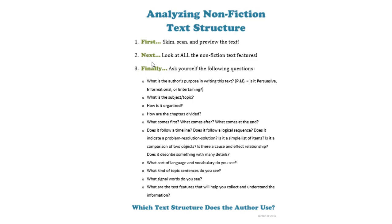Are they describing something in detail? Look at important language and vocabulary, the topic sentence, and those signal words. Sometimes text features are going to help you collect and understand information. What kind of purpose is the author writing this for — is it entertaining you, informing you, or trying to persuade you? All of this can help us find what kind of text structure the author is using.